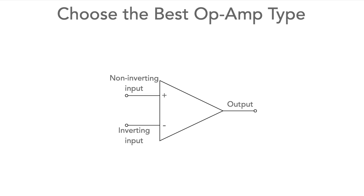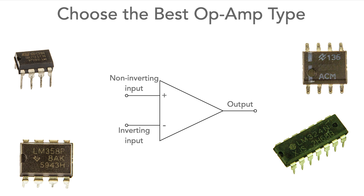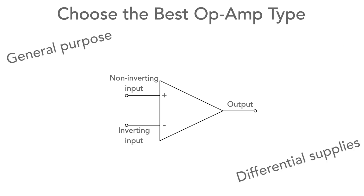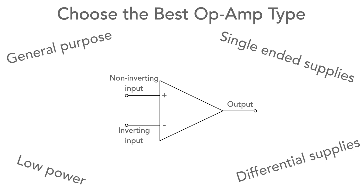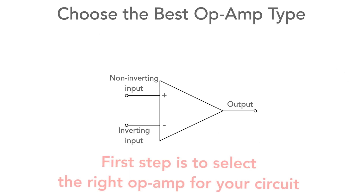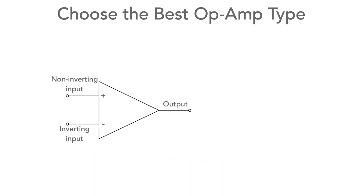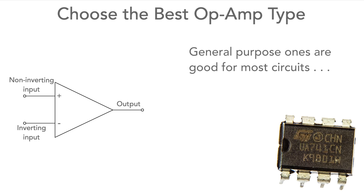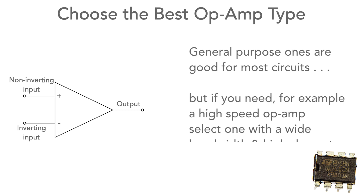First, choose the right op amp. There's a huge number of op amps out there — almost anything you want: general purpose, differential supply voltages, single supply, low power, high input impedance, wide bandwidth, low noise. The list goes on. So the first thing to do is make sure you get the right one for your circuit design. General purpose ones will be ideal for most jobs, but if you want a high speed op amp, you'll need to choose one with a wide bandwidth and high slew rate.